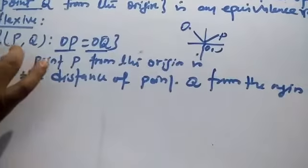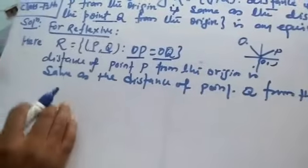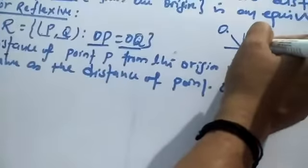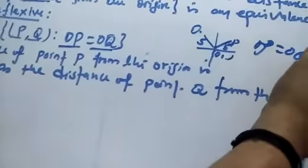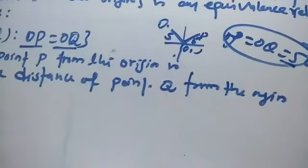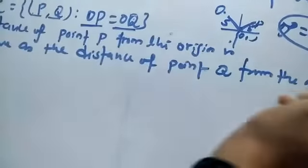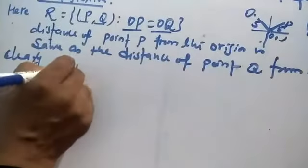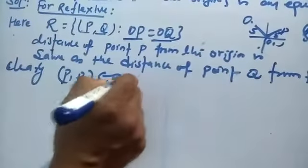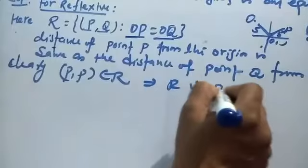For reflexivity: P, P belongs to R, because the distance of point P from the origin is the same as the distance of point P from the origin. So it is clear that P, P belongs to R. Hence, we can say that R is reflexive.